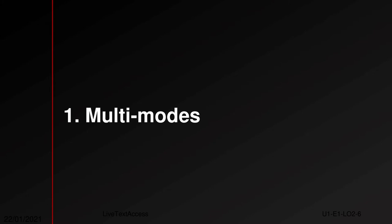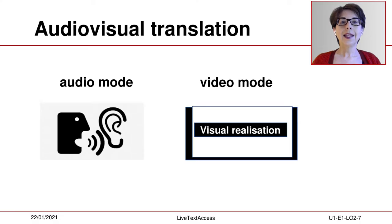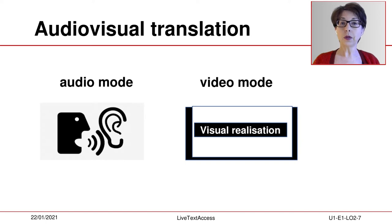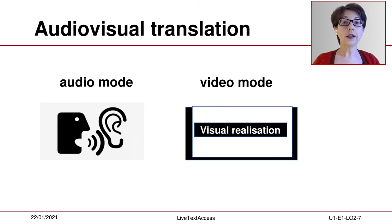The concept of multimodality seems easy to understand at first glance. In audiovisual translation, scholars such as Jorge Díaz Cintas classify modes into two categories: audio and video. Modes help us to classify in which way a specific resource is realized. In multimodal communication, resources are realized either visually or orally.